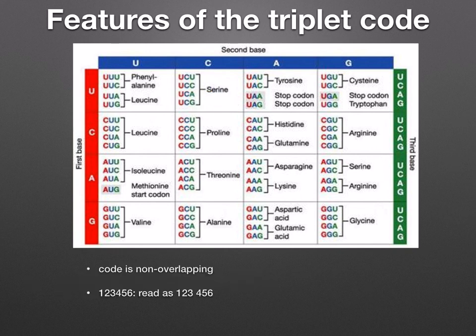We say that the code is non-overlapping. That is, each base in the sequence is read only once. For example, if you have six bases numbered 1, 2, 3, 4, 5, 6, they're going to be read as triplets 1-2-3 and 4-5-6, rather than as overlapping sets. Non-overlapping codes need more bases but are less likely to be affected by error.